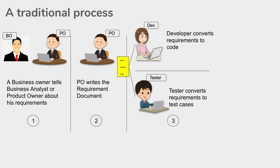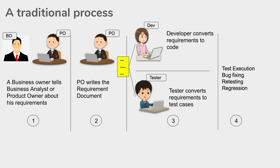The same requirement document is shared with the testing team, who starts creating test cases as per the requirements. Once the coding is done and the test cases are created, we have the test execution phase where tests are executed. If there are any bugs or defects reported, they are fixed, retesting and regression is done, and finally the changes or features are released. This is how a typical traditional process of development looks like.